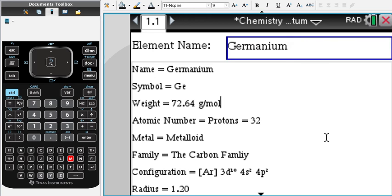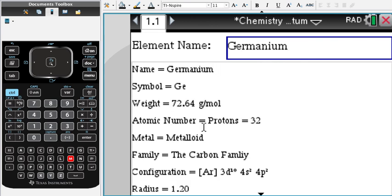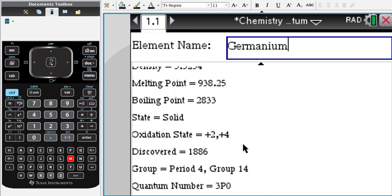You basically have everything from when it was discovered to the melting point to its family, radius, configuration, weight, everything you need on this element right here.